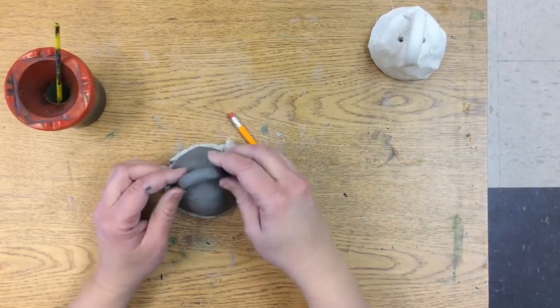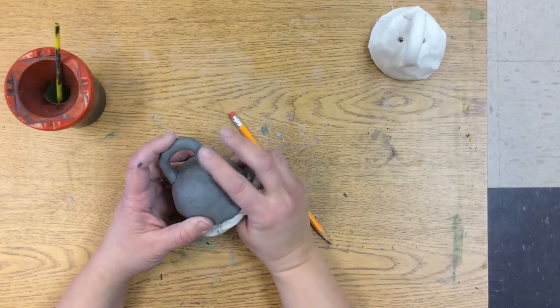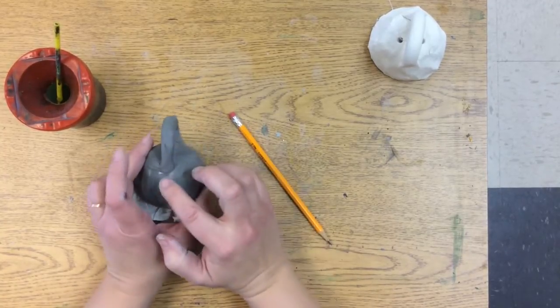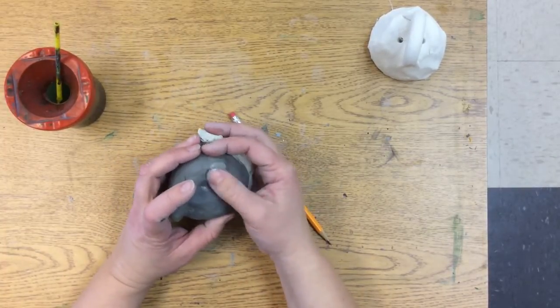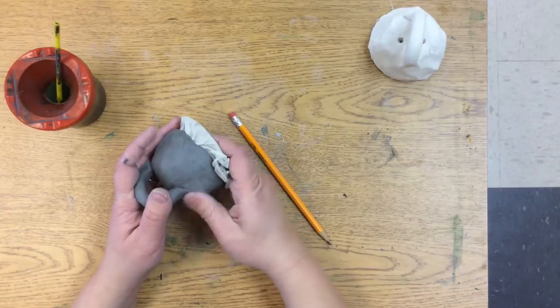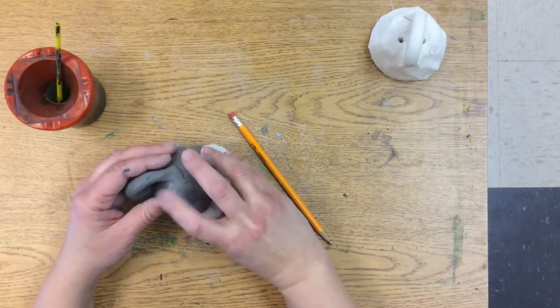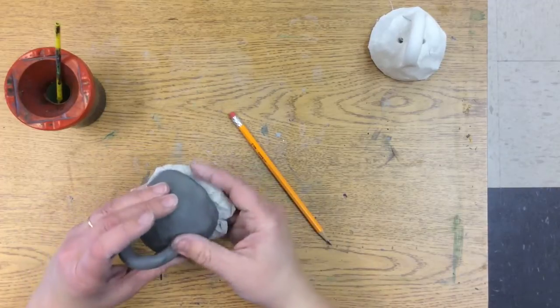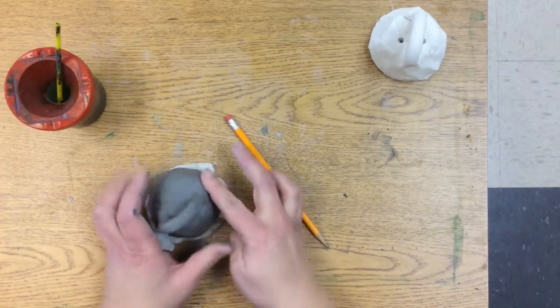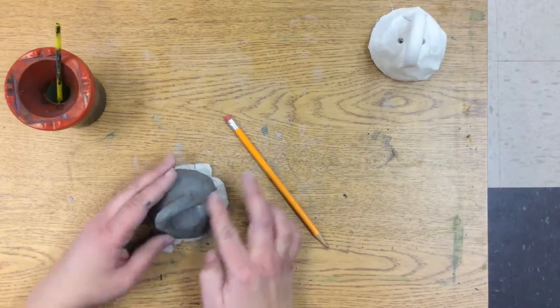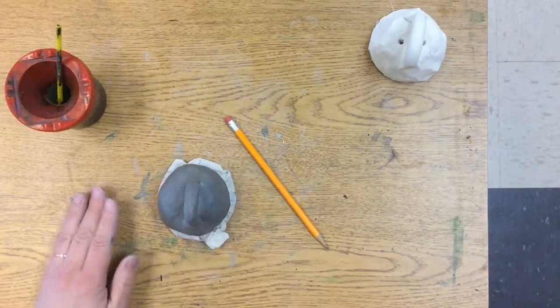Our last step is to smooth it out. So we don't want to see that little seam there—you want to smooth this out like that, smooth it out with our little fingers. And if we need to, we can smooth out the rest of our bell so it's a nice smooth bell for us to paint on next week.